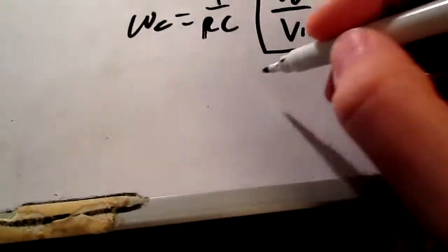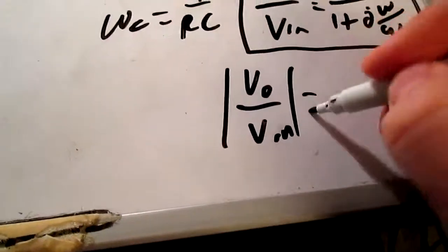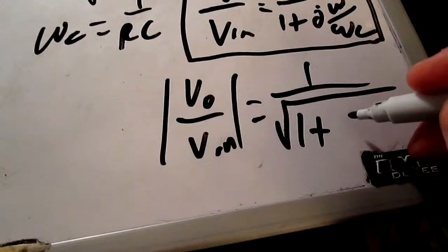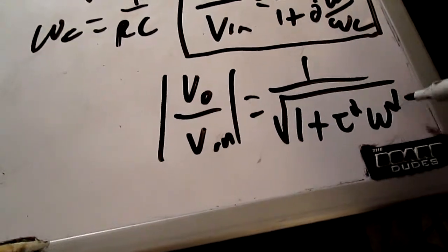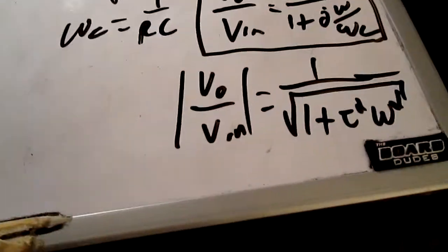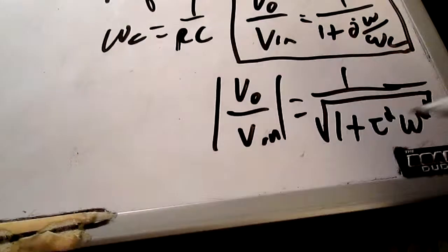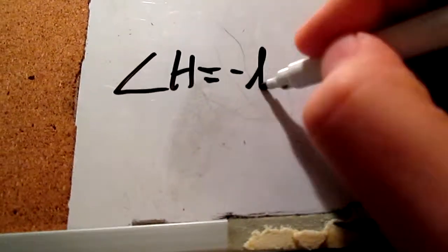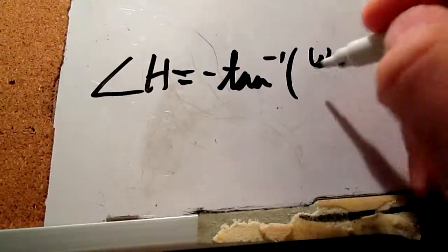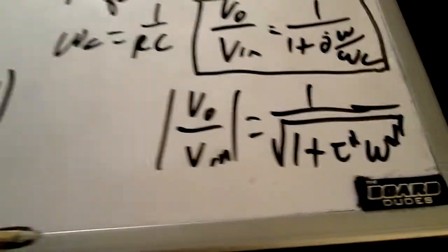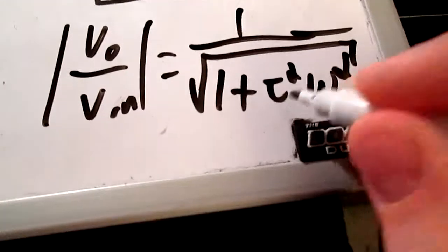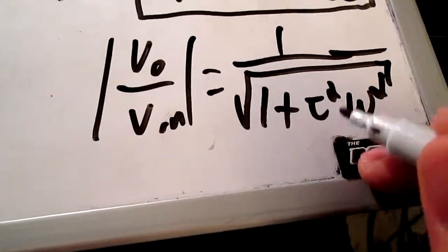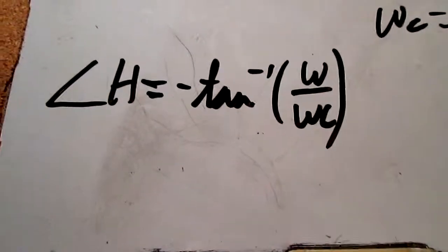And then the magnitude of that. There you go. And as you can see from this, we can get our phase. The phase angle of our transfer function h is equal to the negative arctan omega over omega c. See that? Remember, omega c is equal to 1 over tau. So tau is equal to 1 over omega c. You can see that there.